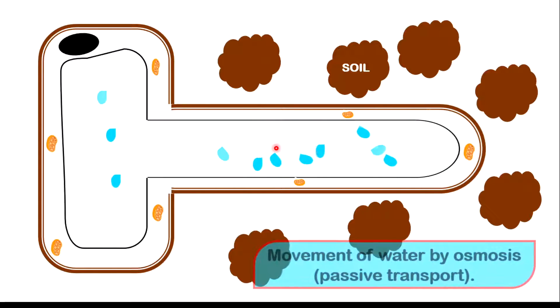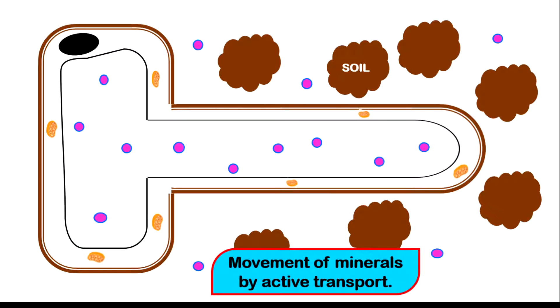Now let us take a look at the movement of mineral salts. For minerals to move, they will move by active transport. What this means is that the minerals will be moving against a concentration gradient. The minerals will move from an area where they are less in concentration to an area where they are more in concentration.